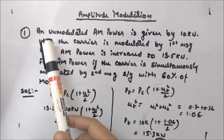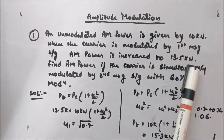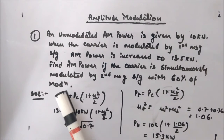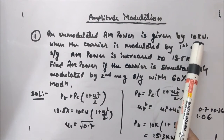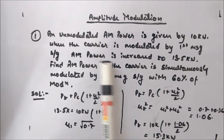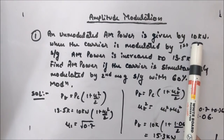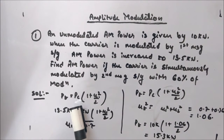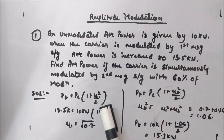Let's look at an example. An unmodulated AM power is 10 kW. When the carrier is modulated by the 1st message signal, AM power increases to 13.5 kW. The unmodulated power means mu was zero, so 10 kW is the carrier power. When modulated by the 1st signal, carrier power is 10 kW and total power is 13.5 kW. Using PT = PC·(1 + mu1²/2) with PC = 10 kW and PT = 13.5 kW, you can solve to get mu1 = √0.7.